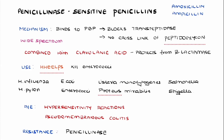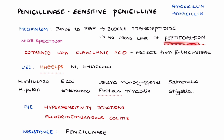Coming to the penicillinase-sensitive penicillins — under this we have amoxicillin and ampicillin. The mechanism is similar to that of penicillin G and V, where the drug binds to the penicillin-binding protein and blocks the transpeptidase, thereby preventing cross-linking of the peptidoglycan, which is required for a strong cell wall.